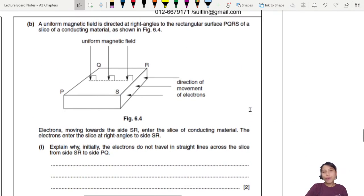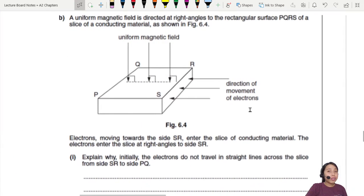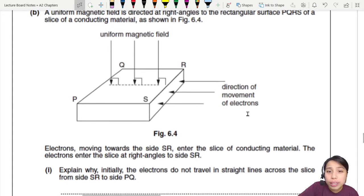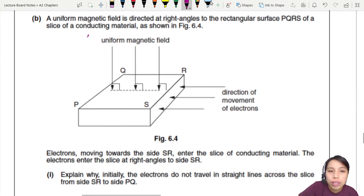Next part, this one is kind of a new thing. We will learn more about this in the coming chapters, but why not try it? A uniform magnetic field is directed at right angles into a slice of conducting material. So conducting means electrons can flow inside this box. Then you have a direction of movement of electrons flowing into that side. Electrons enter the material and explain why initially the electrons do not travel in a straight line.